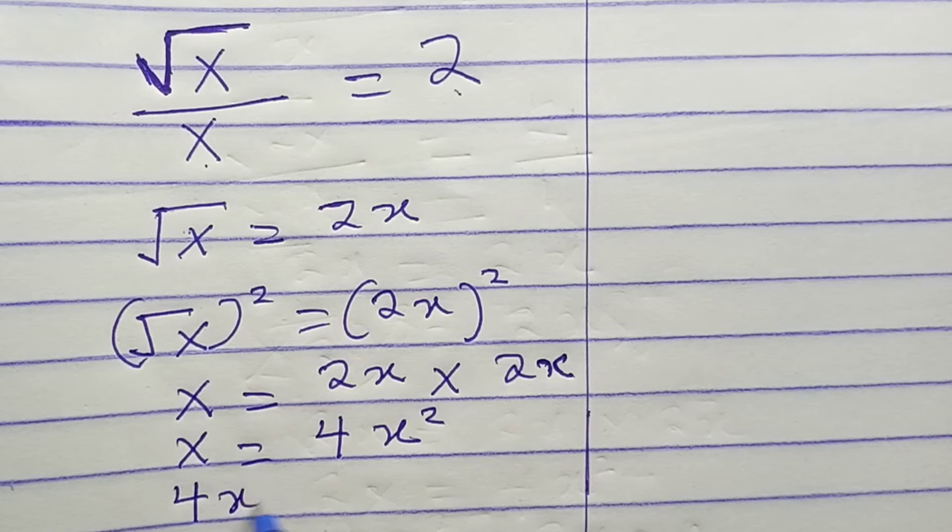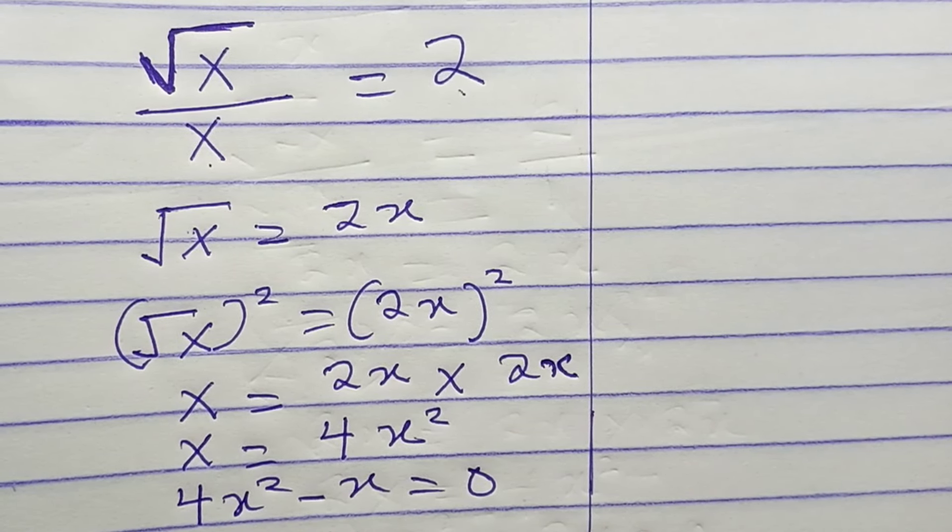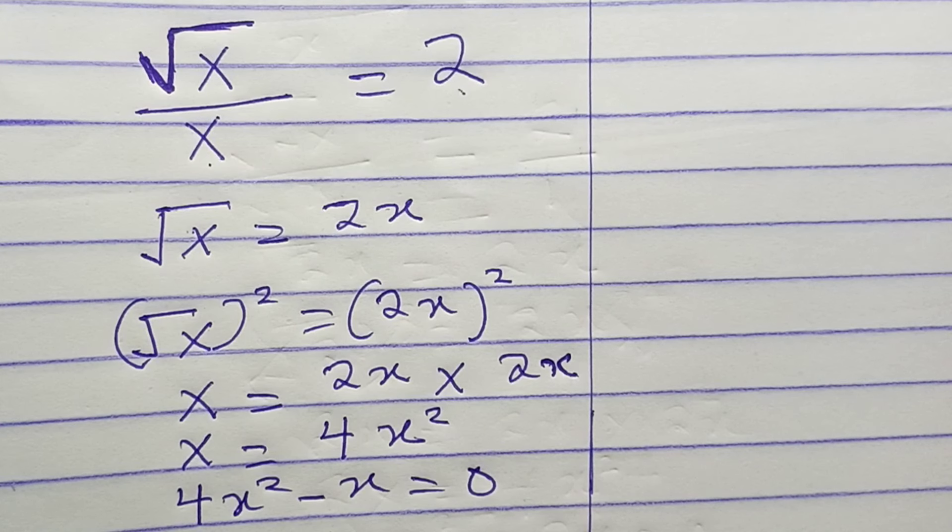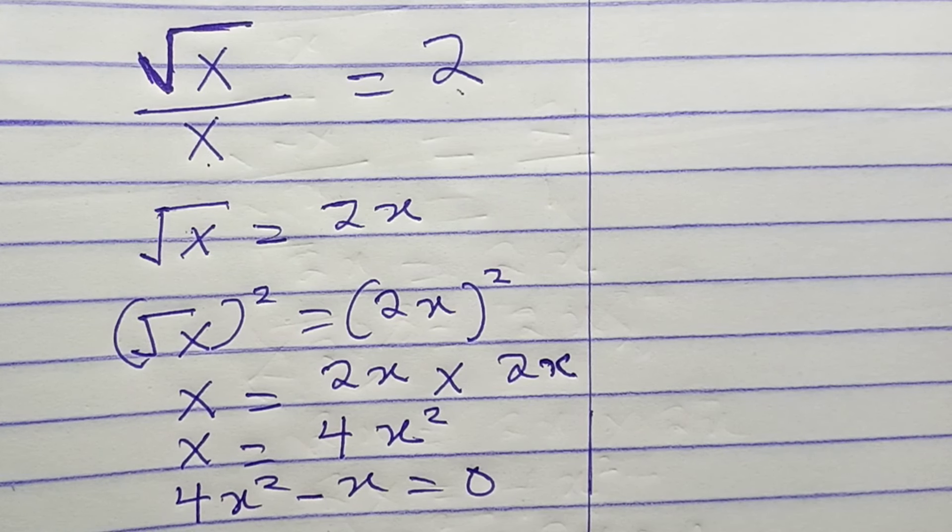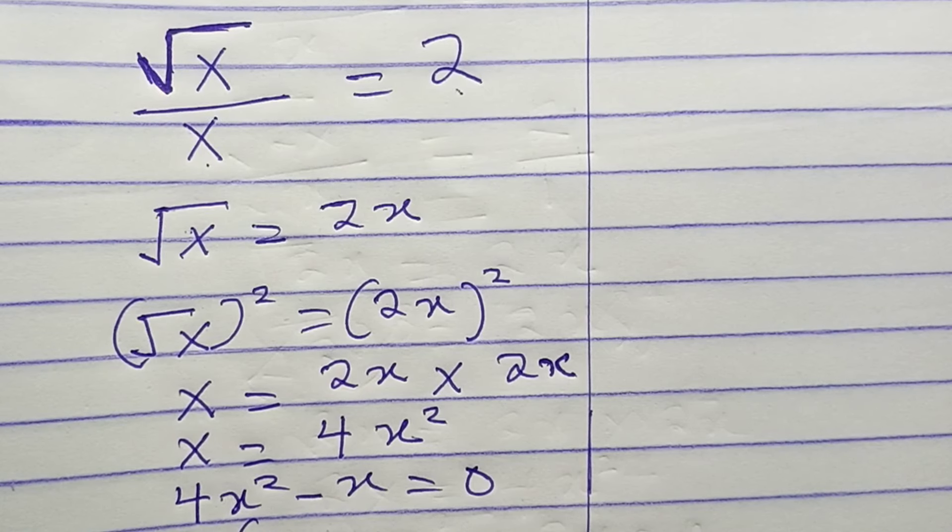This implies that 4x squared minus x equals zero. So we can factorize this. If we factorize, we're going to have x open bracket 4...